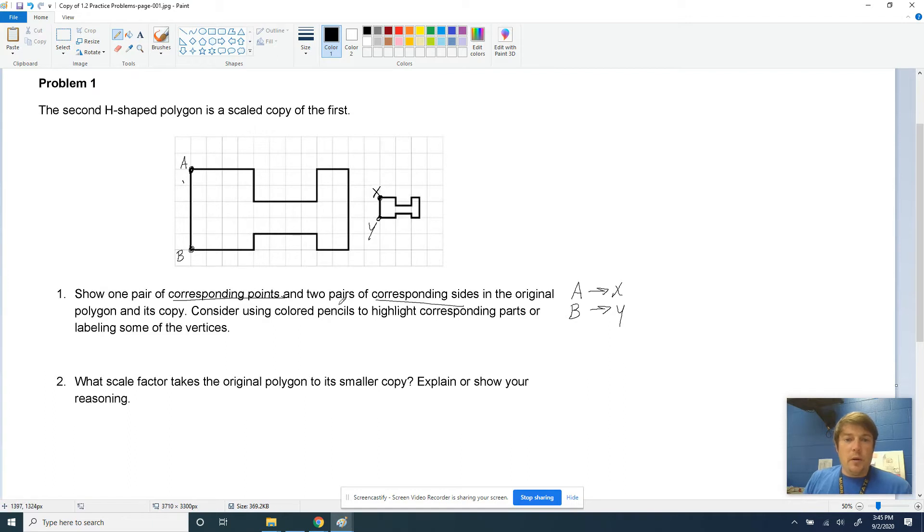Easy enough for my two pair of corresponding points. Now I'm going to need some corresponding sides. So I'm going to use some color for this one just so you can see it better. I'm going to make another point. I'm going to call this C. And I'm going to call this point right here Z. And I'm going to correspond to some sides.